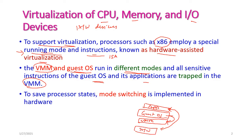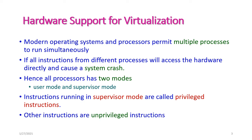To save the processor state, mode switching should be implemented in the hardware itself. In modern operating systems and processors, multiple processors are permitted to run simultaneously, which is otherwise called a multiprocessing system.